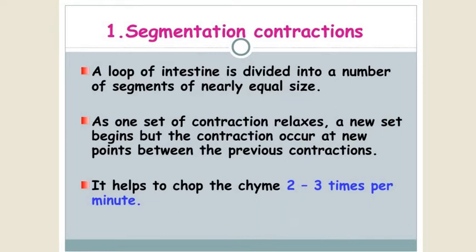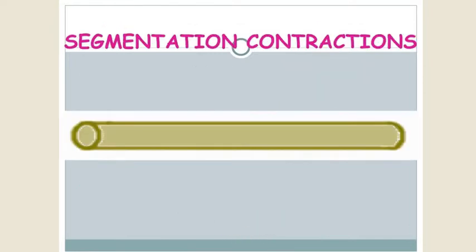The process is repeated at regular intervals: segmentation of one part and then relaxation of another part, contraction of the adjacent part and relaxation of the previous part, but it is a stationary movement.